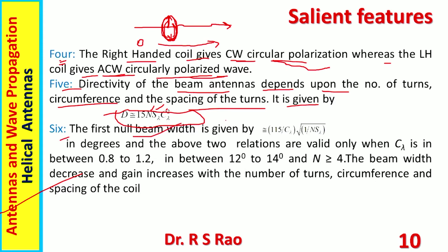The first null beam width is given by the relation 115/(C/λ × √(1/(NS/λ))) in degrees. The above two relations are valid only when C/λ is between 0.8 and 1.2, pitch angle is between 12 and 14 degrees, and N is greater than or equal to 4. Beam width decreases and gain increases with the number of turns, circumference, and spacing of the coil. Note that the formulas given are approximate ones.